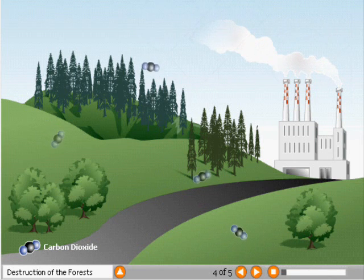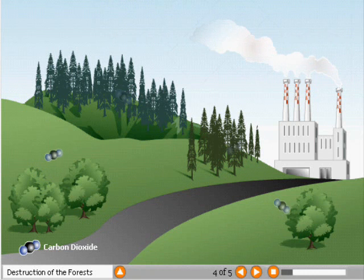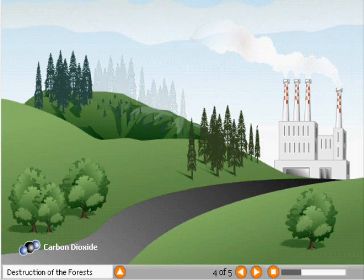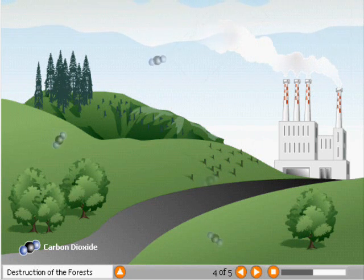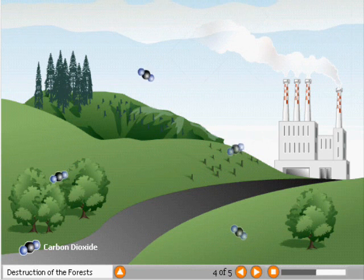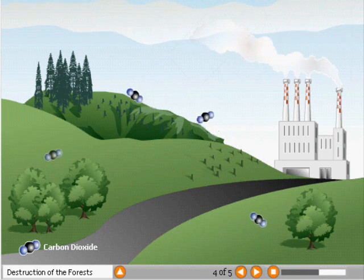Trees remove CO2 from the air as part of their natural processes. As human beings cut down forests, the capacity of trees to remove CO2 from the air is diminished. Scientists are concerned that as we continue to burn large amounts of fossil fuels and deplete our forests, an exaggerated greenhouse effect will occur, resulting in an increase in the world's surface temperature, known as global warming.